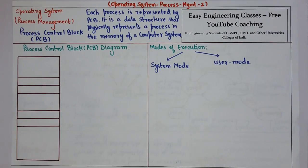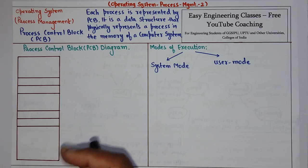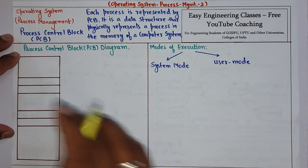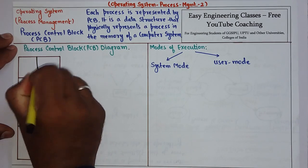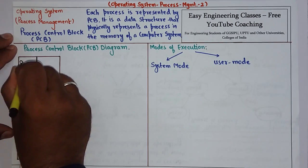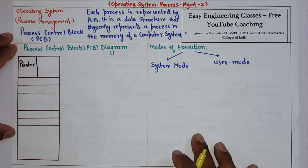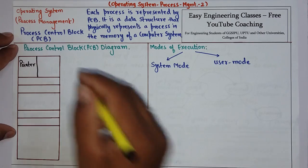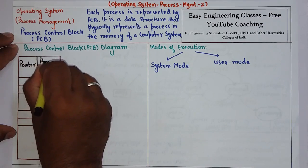Now let's see what are the different kinds of information present in a PCB. First, we have a pointer. The pointer is a simple data structure element that points towards the memory of the stored variable or process. Then we have process state.